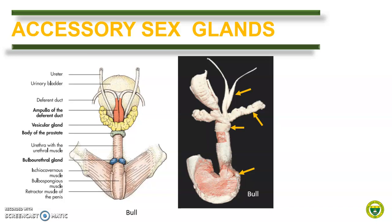Notice that the vesicular gland is large enough and can be palpated transrectally. The prostate gland is composed of both compact and disseminate parts. However, this is not true in small ruminants, as only the disseminated part is present. The bulbo-urethral gland is small, about the size and shape of a cherry.